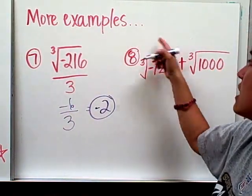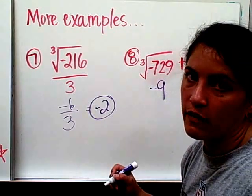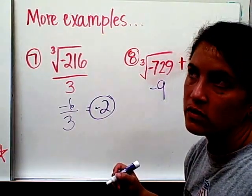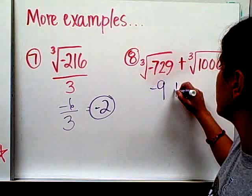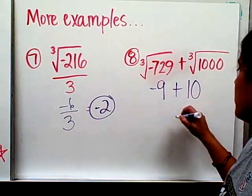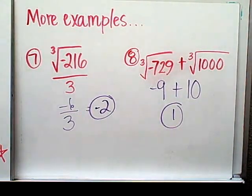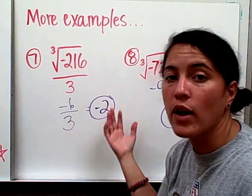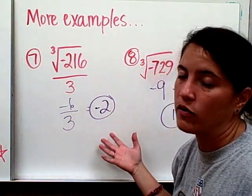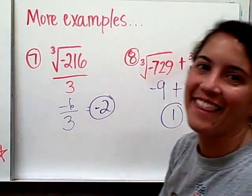And number 8. This right here, I believe, is negative 9. Correct me if I'm wrong. The cubed root of negative 729 plus the cubed root of 1000 is 10. And negative 9 plus 10 is a positive 1. So this is how you would use cubed roots in expressions to solve expression problems. And that's the end.